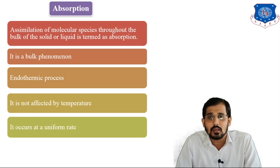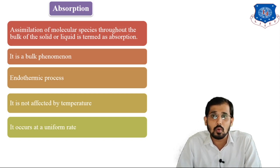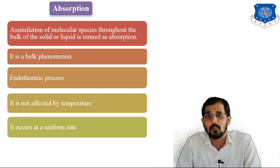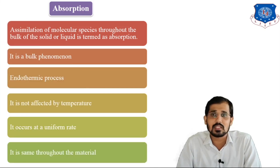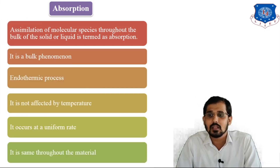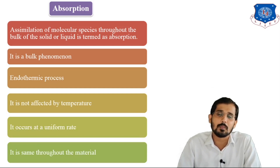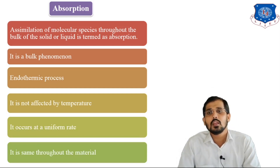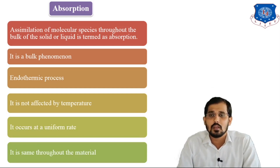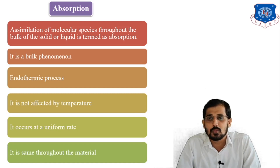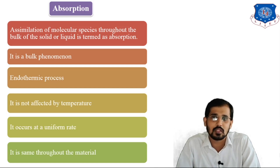Absorption occurs at a uniform rate — throughout the bulk of the liquid, the absorption rate is uniform and the same throughout the material. These are the important points for absorption. If asked for three marks to explain absorption in detail, you can write all these points.